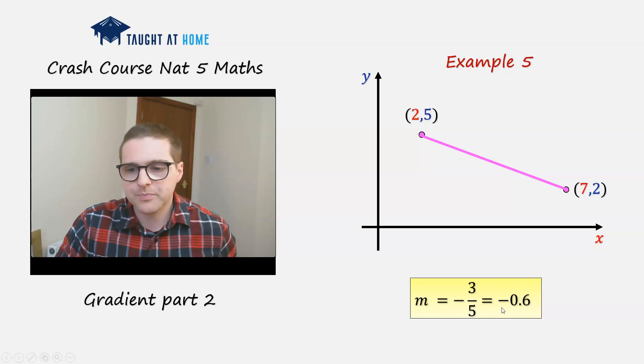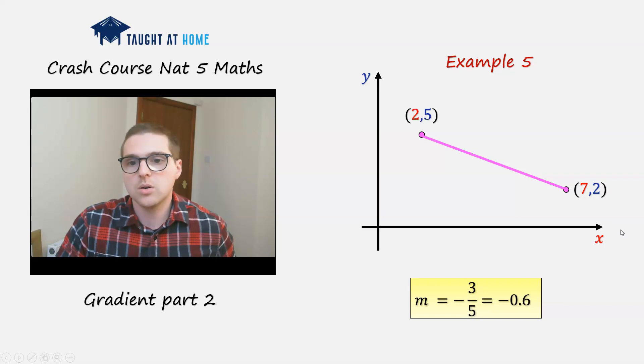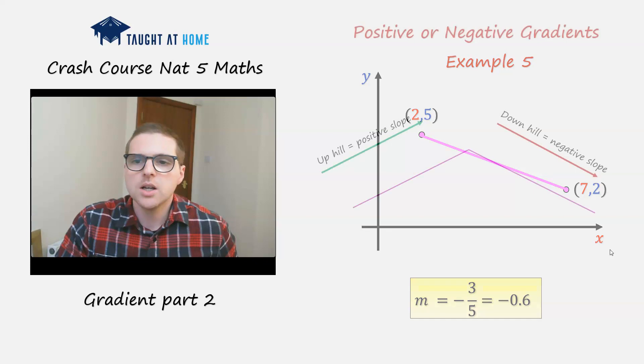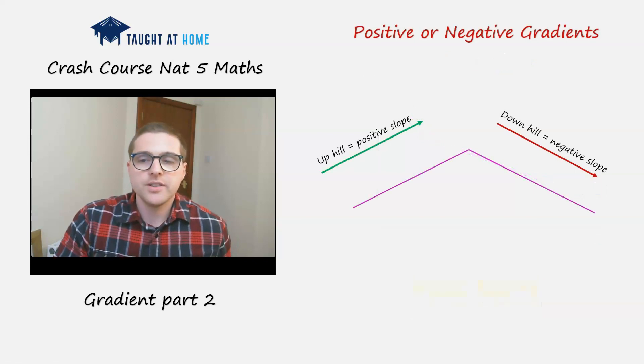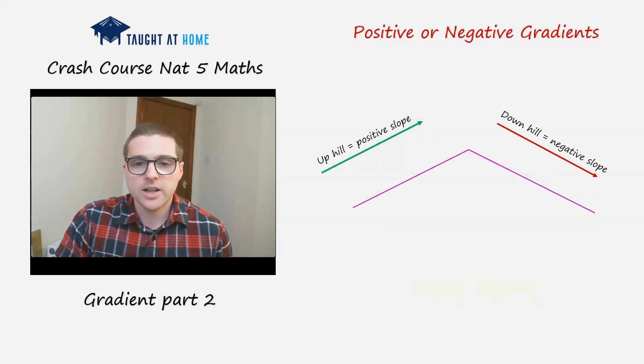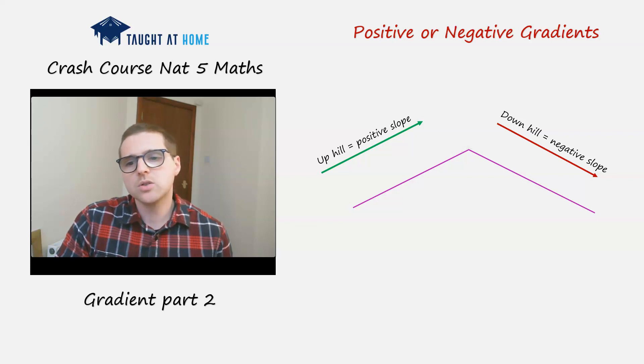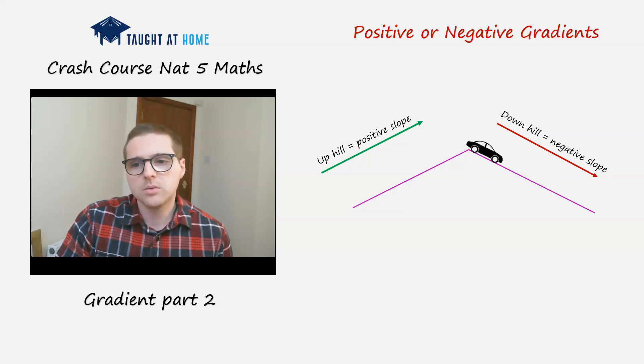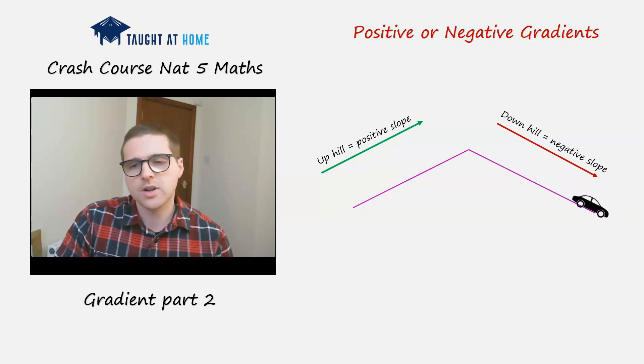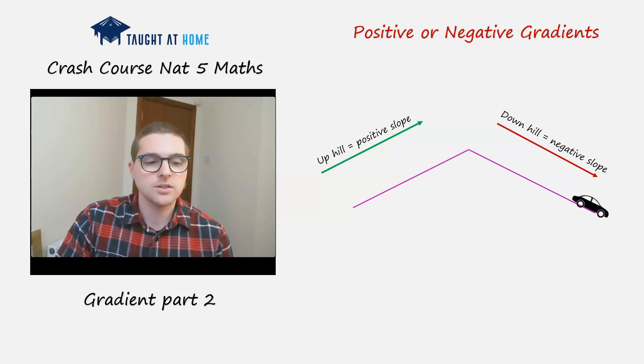Now we have a minus number, a negative gradient. So from left to right, if it's going downwards and there is a negative change in y, then we're going to have a negative number. To think about positive and negative gradients, if you're in a car and you're going uphill like this, we say it's a positive slope, therefore a positive gradient. And when it's going downhill like this, we call it a negative slope. From left to right is how to figure that out.